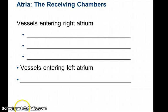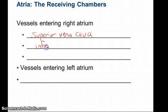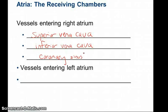Three blood vessels enter the right atrium. First is the superior vena cava, returning all the blood from tissues superior to the diaphragm. Then there's the inferior vena cava, returning blood from tissues inferior to the diaphragm. And lastly the coronary sinus, which drains blood from the myocardium of the heart itself. All this blood entering through the superior vena cava, inferior vena cava, and coronary sinus dumps into the right atrium.